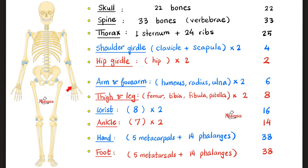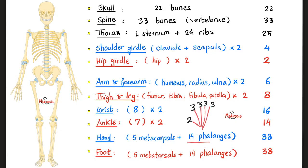The wrist has 8 carpal bones on the right and 8 on the left for a total of 16. The ankle has 7 tarsal bones on each side for a total of 14. The hand has 5 metacarpals and 14 phalanges — each finger has 3 phalanges except the thumb which has 2, giving 14 total. The foot similarly has 5 metatarsals and 14 phalanges — each toe has 3 phalanges except the big toe which has only 2. The foot does not have a thumb; it has a big toe.